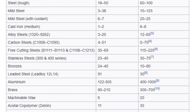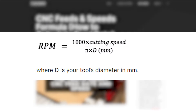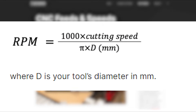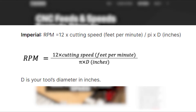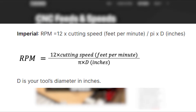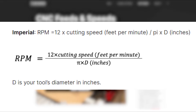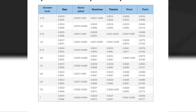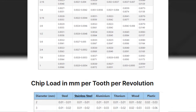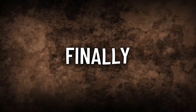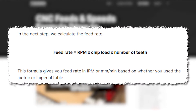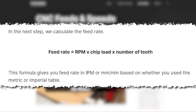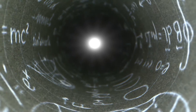Chip load is measured in inches per tooth per revolution. Now for the formulas: first, determine the optimal surface speed for your specific material and tool from reference tables, then use that surface speed to calculate RPM. For imperial units: RPM = (12 × surface speed in FPM) ÷ (3.14 × tool diameter in inches). Next, choose the recommended chip load from a reference table, then calculate feed rate in IPM by multiplying RPM × chip load × number of flutes.